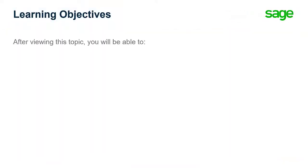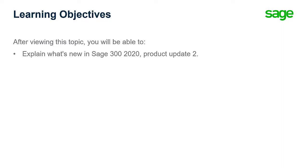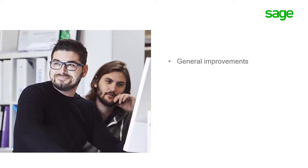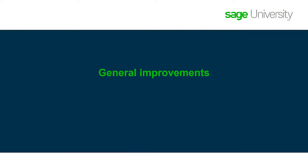Over the next few minutes, we will show you what's new in Sage 300 2020 Product Update 2. This release includes changes in two main areas: general improvements and web screen improvements. Let's start by looking at general improvements, available in the Sage 300 cloud web screens and in the Sage 300 classic screens.